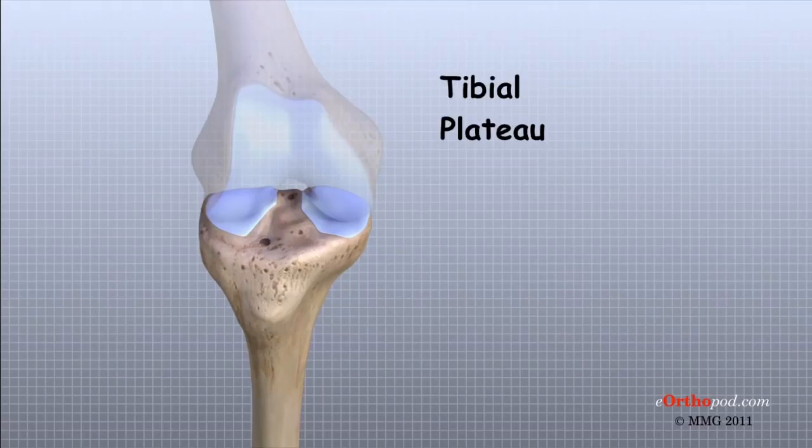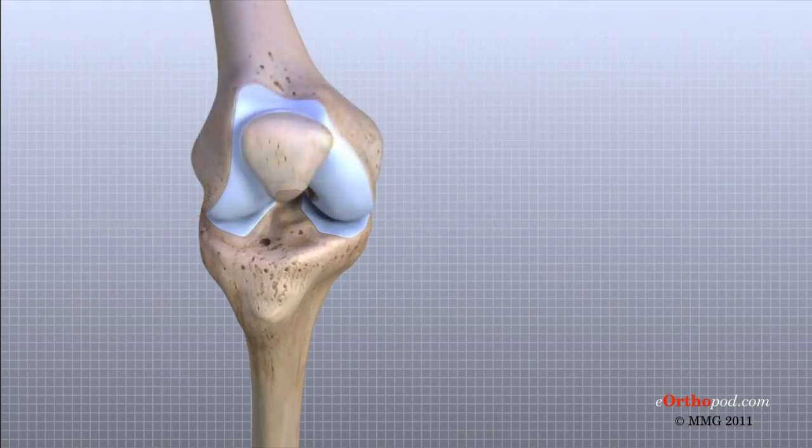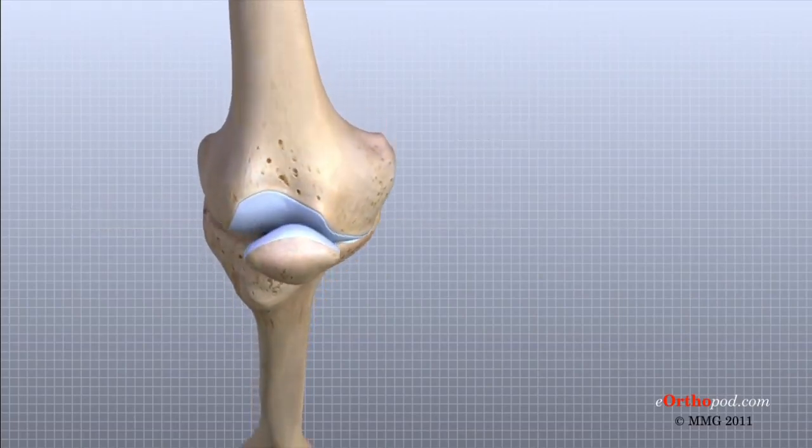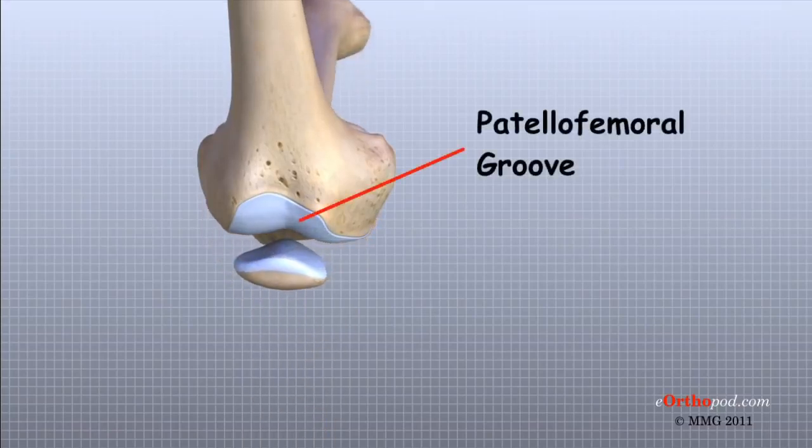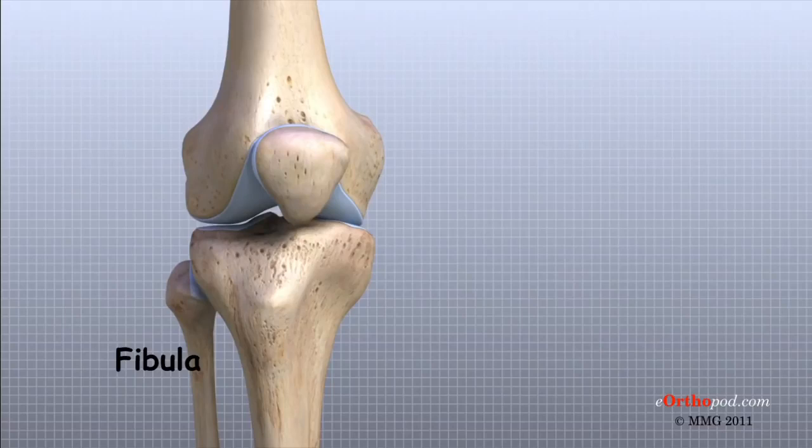The outside half, the farthest away from the other knee, is called the lateral tibial plateau. And the inside half, closest to the other knee, is called the medial tibial plateau. The patella glides through a special groove formed by the two femoral condyles called the patellofemoral groove. The smaller bone of the lower leg, the fibula, never really enters the knee joint. It does have a small joint that connects it to the side of the tibia. This joint normally moves very little.